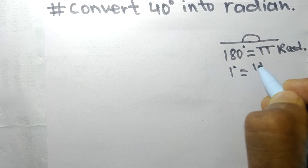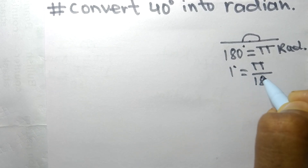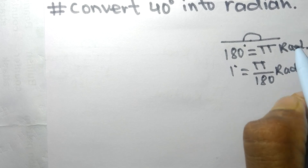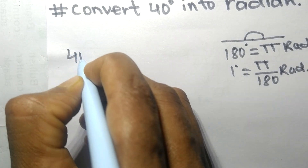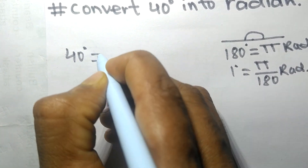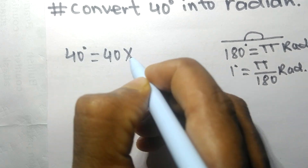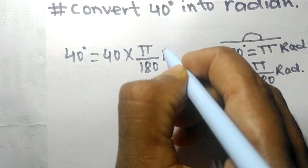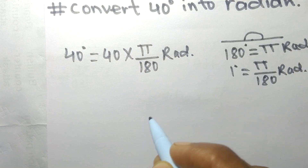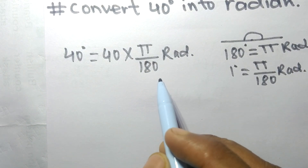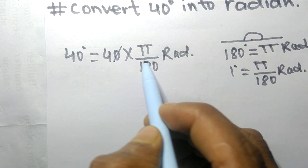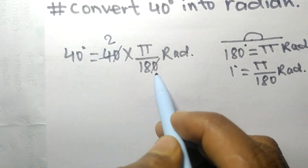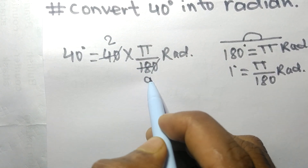In the same way, 40 degrees is equal to 40 into pi by 180 radians. Now we cancel the numbers — the zeros cancel, 2 times 2 equals 4, and 2 times 9 equals 18.